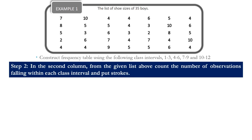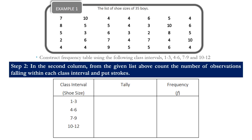Let us continue to step 2. In the second column, from the given list above, we count the number of observations falling within each class interval and put strokes. Our first column is complete with class intervals 1 to 3, 4 to 6, 7 to 9, and 10 to 12. To tally, we look at the data and put a stroke on the interval it belongs to. Our first data is 7 — it falls in the class interval 7 to 9, so we put 1 stroke. Then 10 falls in the class interval 10 to 12, so that is another 1 stroke for that interval.